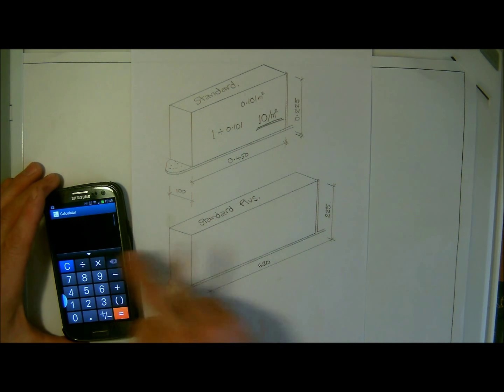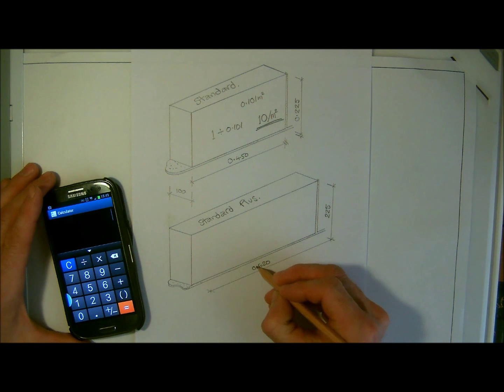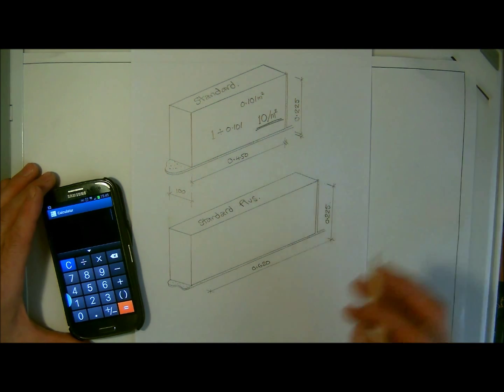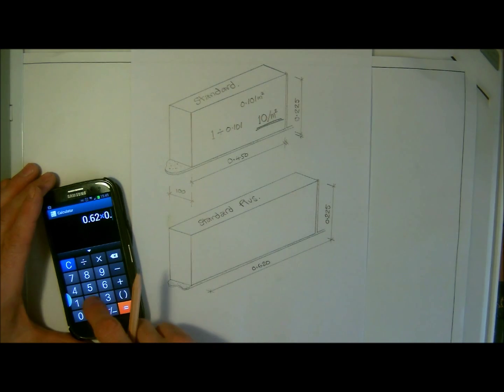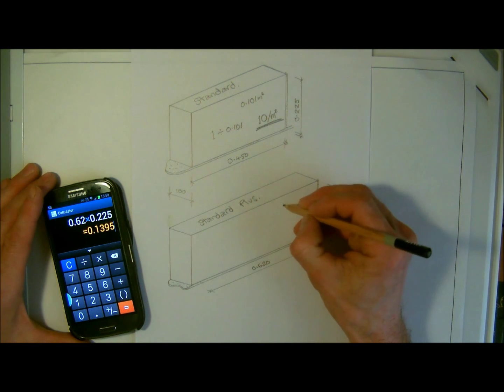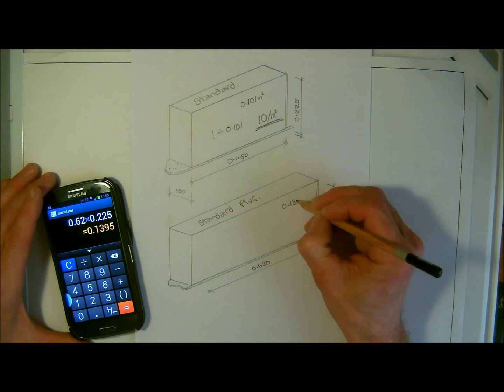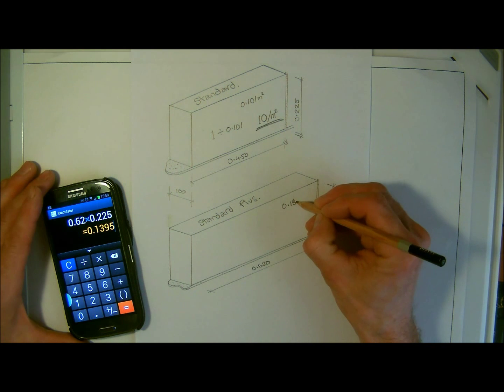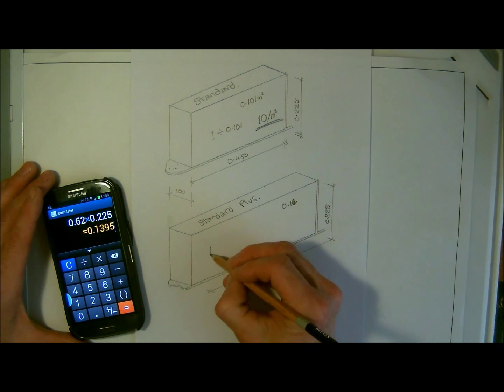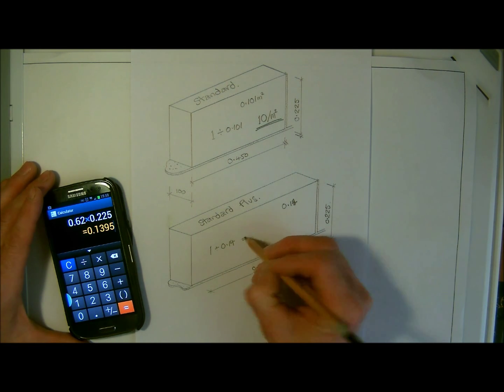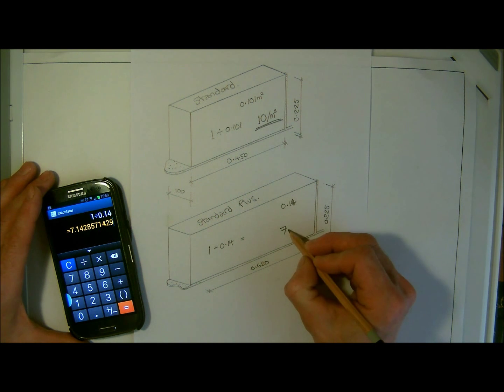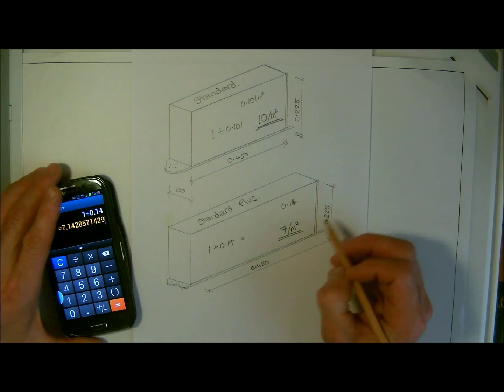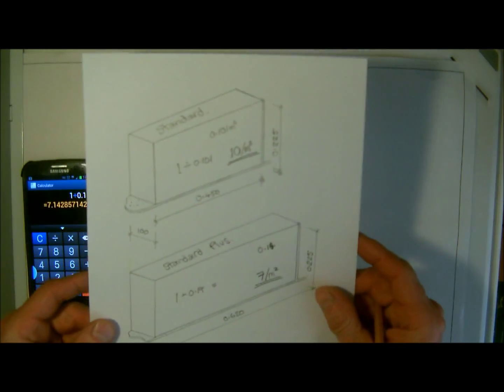Right, so if we do that, same principles, with the standard plus, we're going to be looking at, again, just put the 0.0 together into metres, and we're going to be looking at 0.62 multiplied by 0.225, and we're going to say that is 0.14, really, because that's 9.5 at the end of it. So, again, I'm going to have 1 divided by 0.14 equals, we'll just get back to there, 1 divided by 0.14 equals, you can see for these ones we need 7 per metre squared, underlined. OK, so that is how many we need for the blocks of mortar.